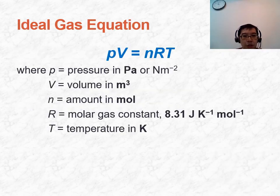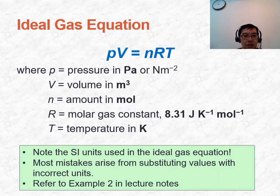The ideal gas equation is the equation we should be very familiar with: PV = nRT. For every equation, we must be aware of the units — pressure in Pascal or Newton per meter squared, volume in meter cubed, amount in number of moles. R can be found in the data booklet with a numerical value of 8.31, and temperature must be in Kelvin.